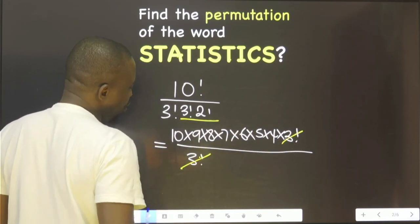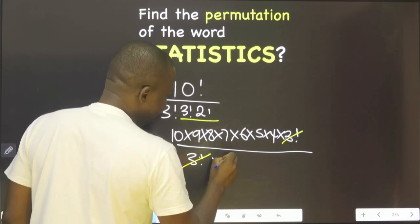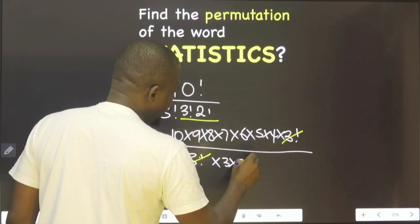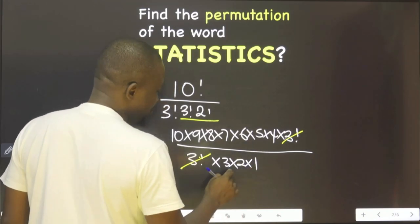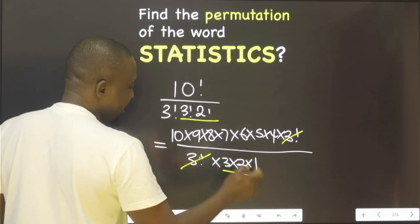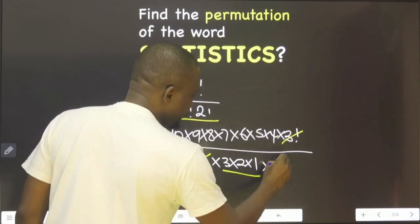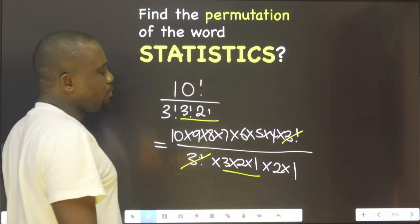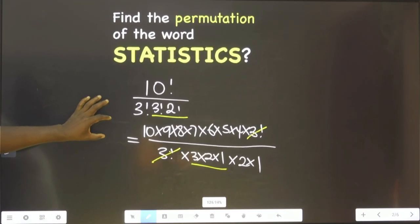So the remaining ones I need to express: multiplied by 3 factorial, 2 factorial, 1 factorial. This is for only this one. Then the second one is 2 factorial multiplied by 1 factorial.